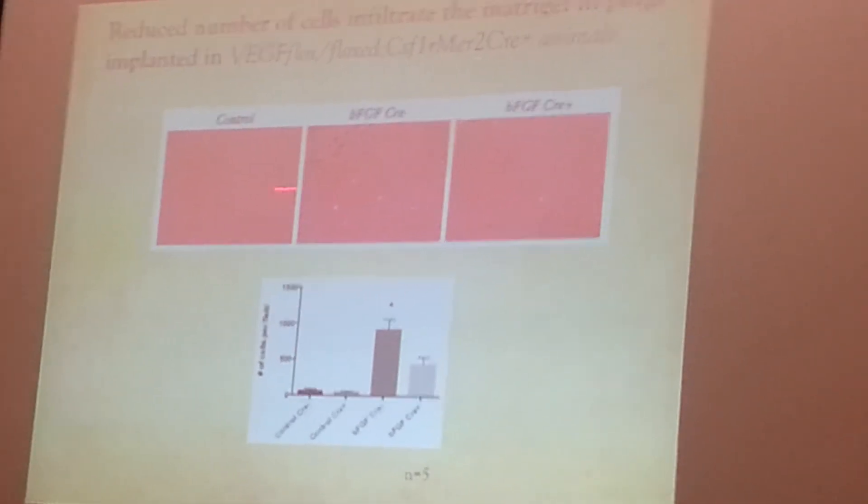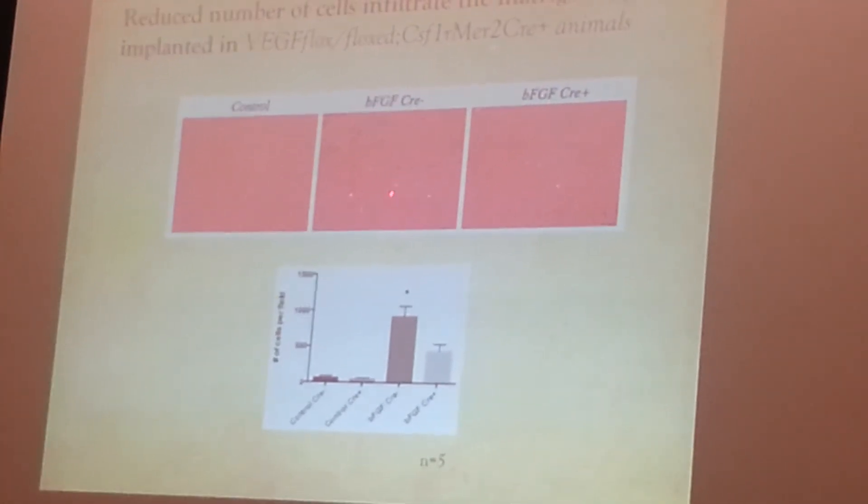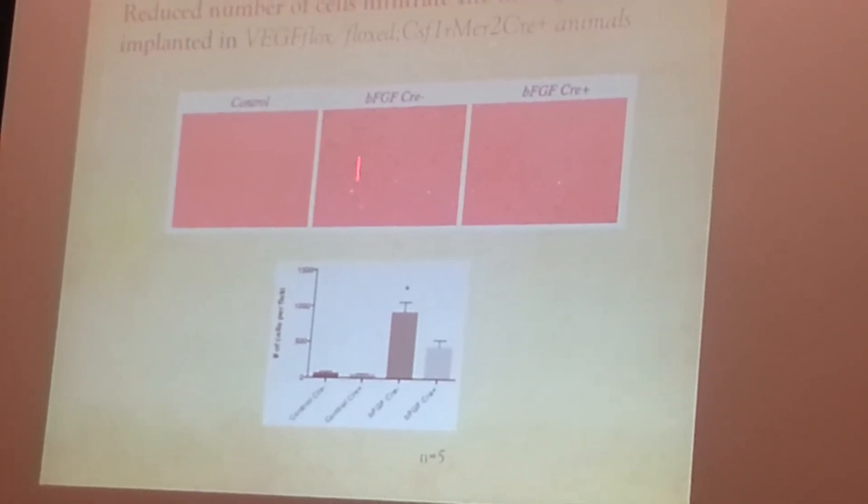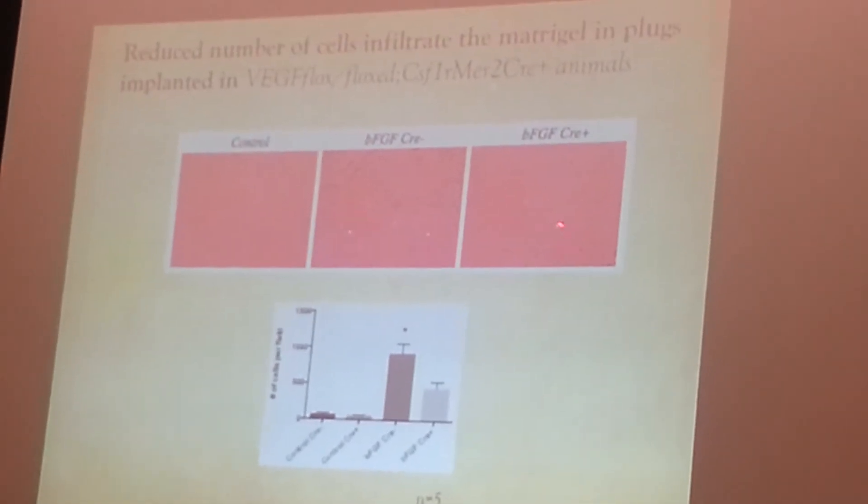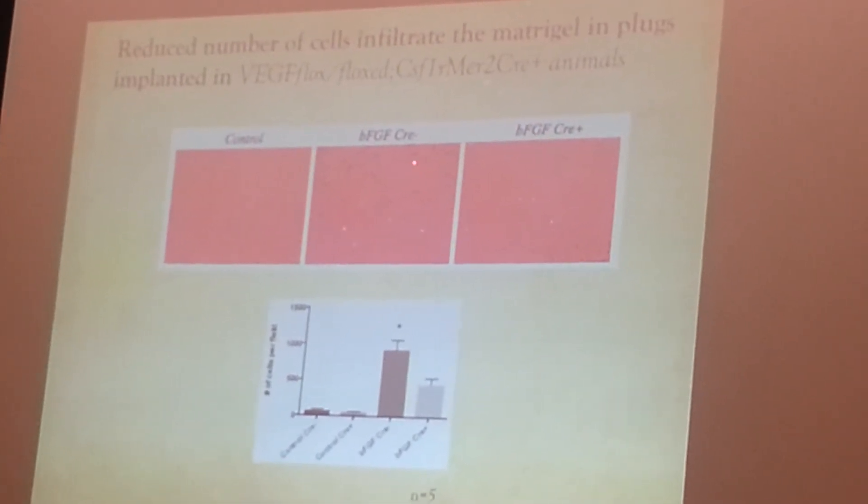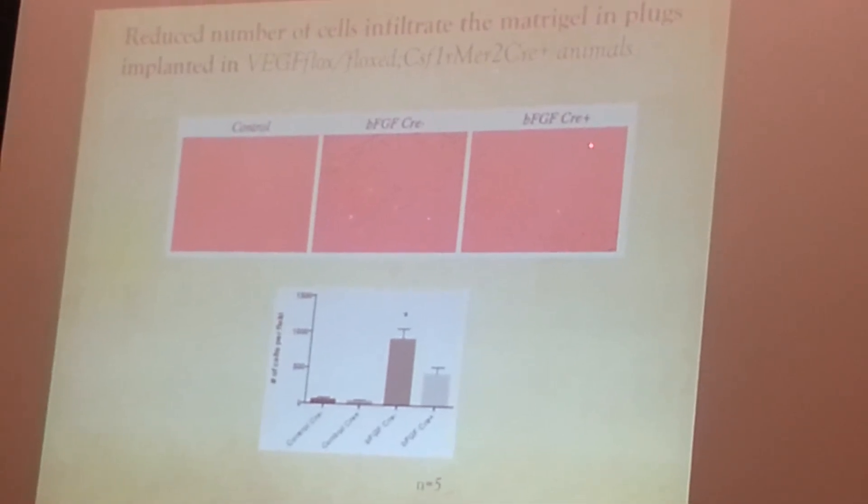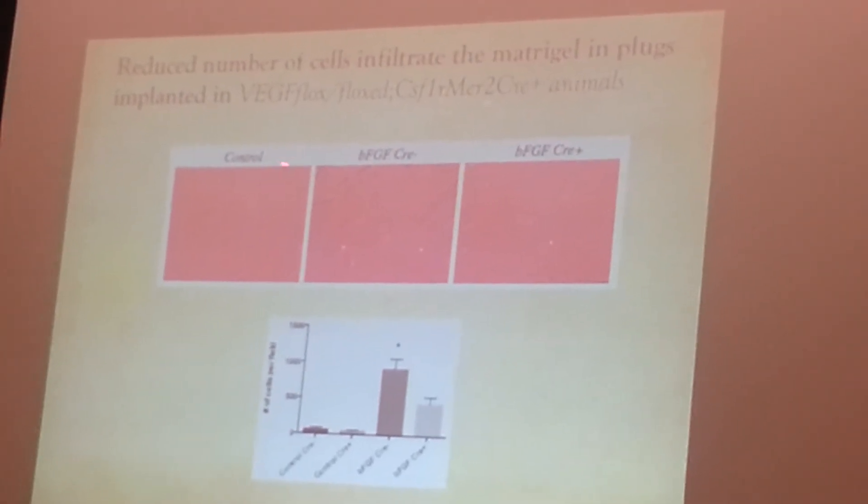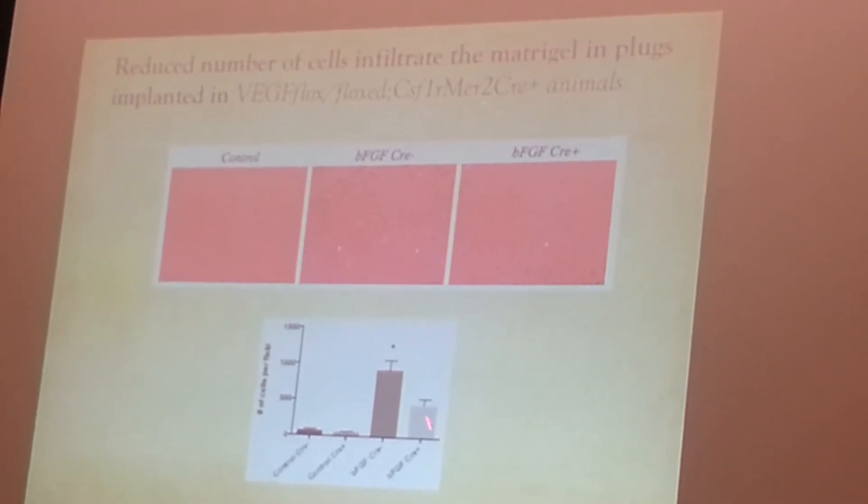In the basic FGF, but in the wild type, you have an infiltration of cells. However, in the animals that don't have VEGF in the macrophages but have basic FGF in the plug, they have lower levels of cells infiltrating in the macrophages. This is shown also by the graph. This is a significant difference.